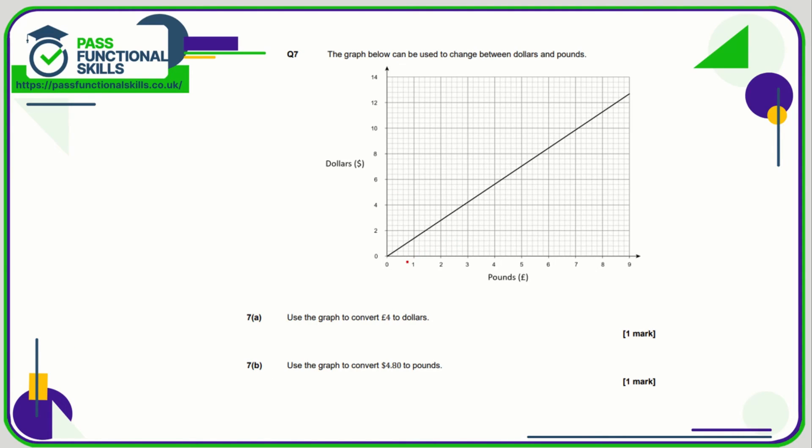Question 7, we are using a graph for conversion purposes. We want to convert £4 to dollars. We can see pounds along the bottom. So £4 corresponds to this part of the line here, and that corresponds to one line below 6. So we need to work out the scale here. So 4.0, 4.4, 4.8, 5.2, 5.6, 6. So we're going up in 0.4s because 2 divided by 5 is 0.4. And that is therefore 5.6, so $5.60.